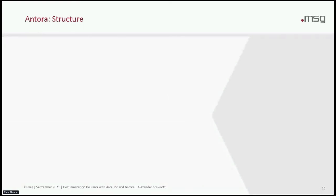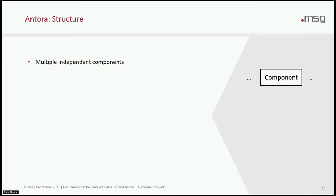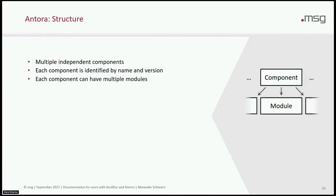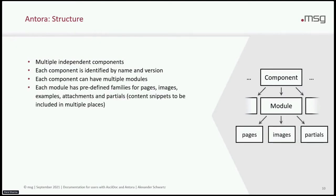Let's dive into Antora a bit more. Let's start with the structure. Antora has components — an Antora documentation site can have multiple independent components, each identified by name and version. Each component can have multiple modules, and you can have cross-references between components and across modules. Each module has a predefined structure: there are pages, images, examples, attachments and partials. Partials are content snippets that can be included in multiple places, which helps you to make your site consistent as you don't need to copy around content.